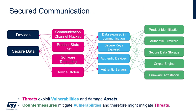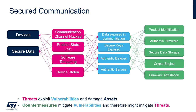He also needs to encrypt all the communication without exposing the encryption key to guarantee the integrity and confidentiality of the data exchanged. Looking at this secured communication example, Olivier values his devices and needs to make sure data that is at rest is stored securely. He sees a variety of threats and vulnerabilities and uses firmware attestation, a crypto engine, product identification, firmware authentication, and secure data storage mechanisms to address the vulnerabilities that are of concern.